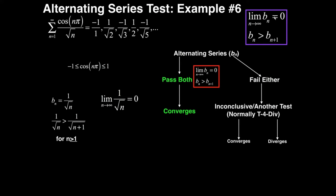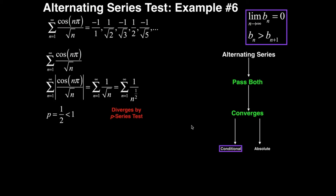Therefore, because both of these criteria are satisfied, we know that this series converges. But again, this does not tell us whether it's absolute convergence or conditional convergence. We need to take the absolute value of our original series and see whether or not that converges or diverges.